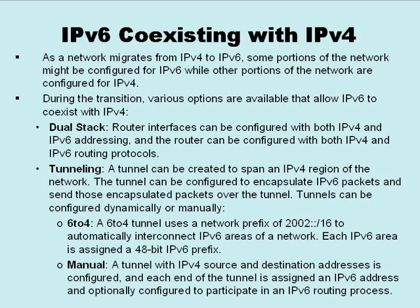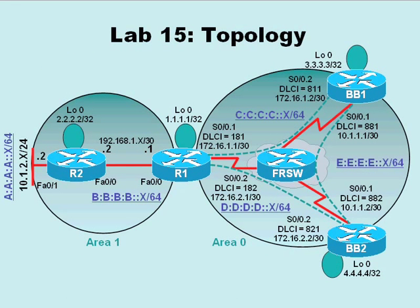In lab 15, we're building on configurations from labs 13 and 14. In lab 13 we assigned IPv6 addressing to the routers, and in lab 14 we configured OSPF version 3 for IPv6 traffic. What we're doing in lab 15 is removing IPv6 configuration for the link between routers R1 and R2 — specifically the B:B:B:B::/64 network. The FastEthernet 0/0 interfaces on R1 and R2 will retain their IPv4 addressing but will not participate in OSPF version 3 and will not have IPv6 addressing.